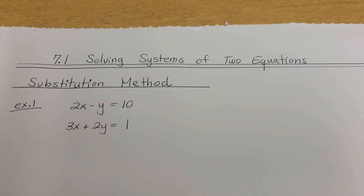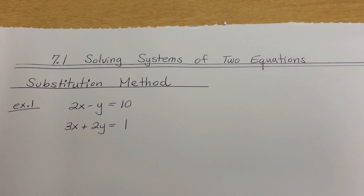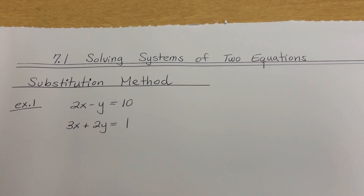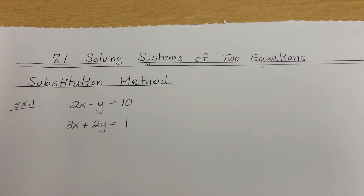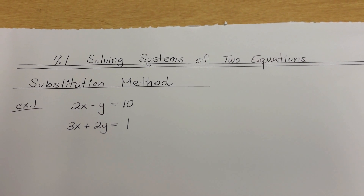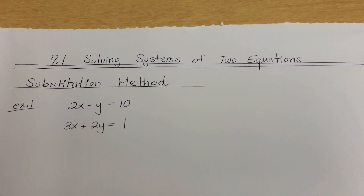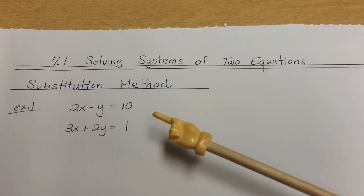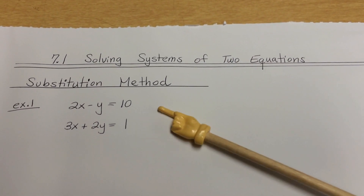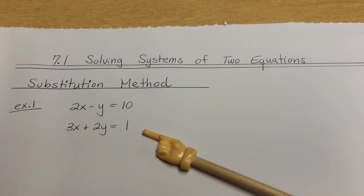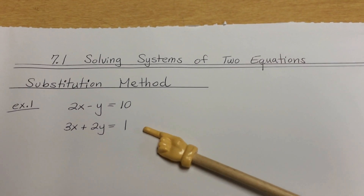Section 7.1: solving a system of two equations. When we're solving a system of equations, it means we're going to have two equations — two or more, actually. Sometimes there could be two or more equations.